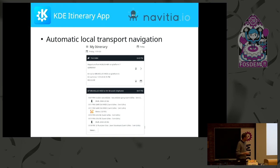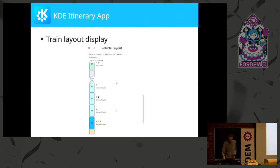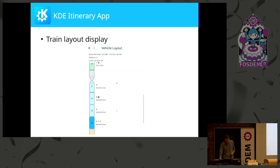Something pretty new is an assistance feature to automatically fill gaps in your itinerary. So if I arrive at the main station in Brussels and have a hotel somewhere, it now suggests taking metro line 2 to get there — moving from just managing data to actively supporting you. Also brand new is the train layout display, showing where on the platform you need to go to find your reserved seat.